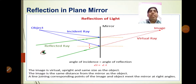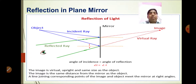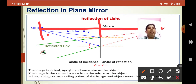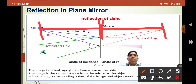Now we are going to read about the images formed by a plane mirror. In a plane mirror, the image formed is virtual, upright, and the same size as the object. The image formed by a plane mirror is always the same size as the object and also the same color as the object. We know that images have color, but shadows do not.